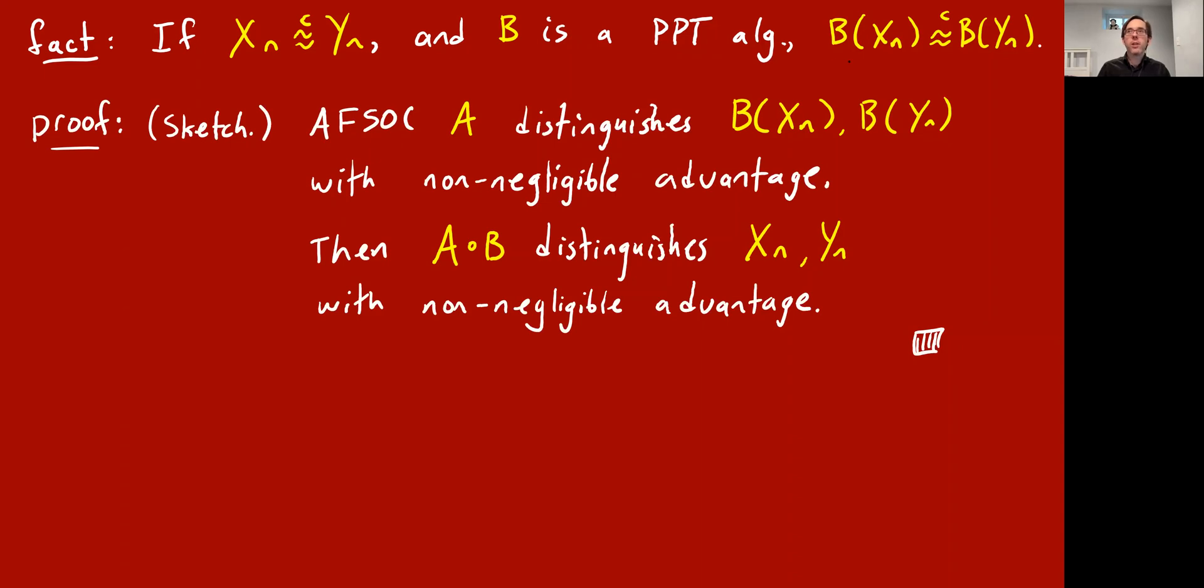Let's assume for a contradiction that they're not indistinguishable, B of X and B of Y, which means there's some algorithm A which distinguishes these two ensembles with non-negligible advantage. You plug in B of X to A and you plug in B of Y to A and A has a noticeable non-negligible difference in outputting probability difference in outputting one. Well, then A combined with B, first run B, then run A is a distinguisher that gets non-negligible advantage in distinguishing Xn and Yn. Okay, and that contradicts the assumption that Xn and Yn are computationally indistinguishable. So we're relying on the fact here that the composition of two polynomial time algorithms is another polynomial time algorithm.